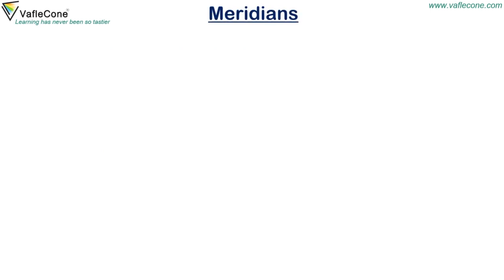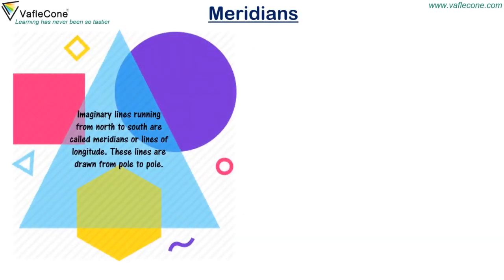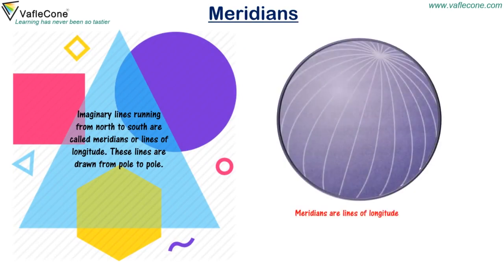Meridians. Imaginary lines running from north to south are called meridians or lines of longitude. These lines are drawn from pole to pole.